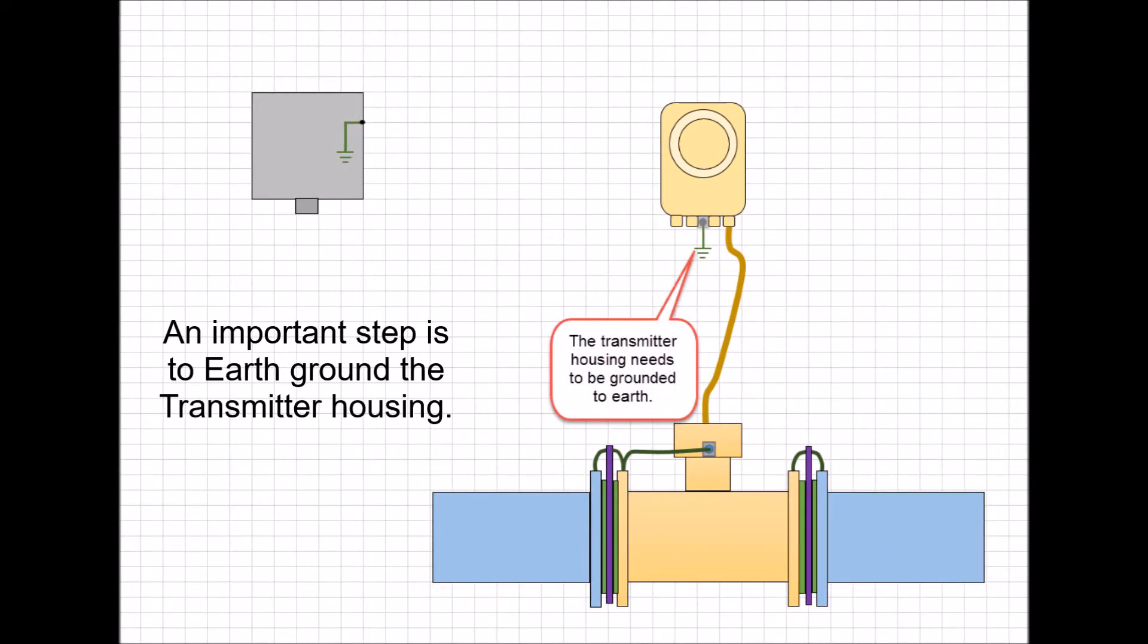In many installations the transmitter housing is left ungrounded. Many installations assume that bolting the housing to a metal frame is sufficient. It is not. The housing ground lug provides earth for the safety ground and equalizes the potential between the power source earth, the housing earth and the meter body. It also provides protection from surge events.